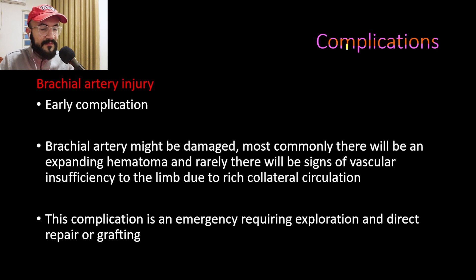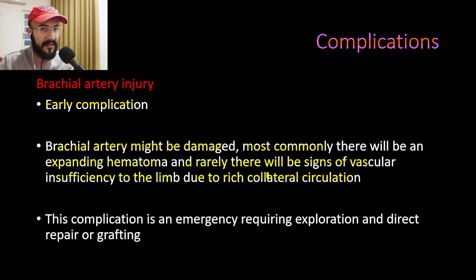Complications of humeral shaft fractures include brachial artery injury, which is an early complication. The most common manifestation is an expanding hematoma; rarely there are signs of vascular insufficiency due to rich collateral circulation. Signs of vascular insufficiency include absence of distal pulses, pale limb, and slow capillary refill time. This is an emergency requiring exploration and direct repair or grafting.